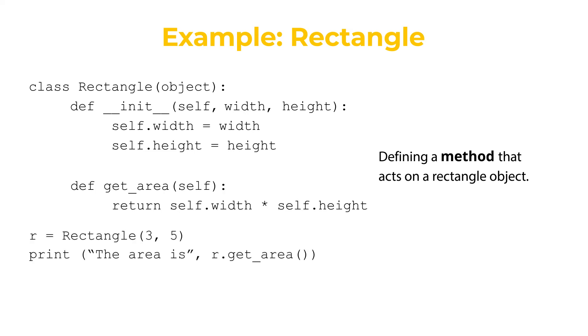Now, when we call this method by doing r.get_area(), this r is passed as the argument. So this r is assigned to self, which means in the method, we end up returning r.width times r.height. And that is exactly what we want.